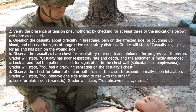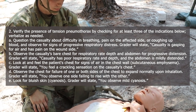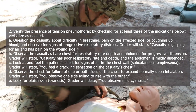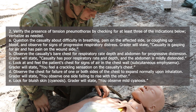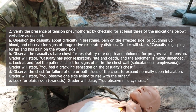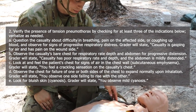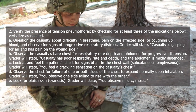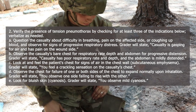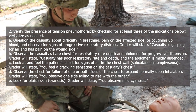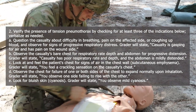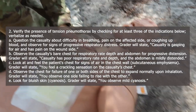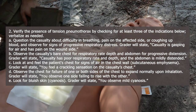Grader roleplay state: casualty is gasping for air and has pain on the affected side. Next, observe the casualty's bare chest for respiratory rate, depth, and abdomen for progressive distension. Grader roleplay state: casualty has poor respiratory rate and depth; abdomen is mildly distended. Look and feel the patient's chest for signs of air in the chest wall. Grader roleplay state: you feel a crackling sensation on the casualty's chest.